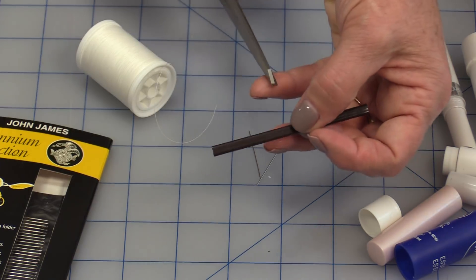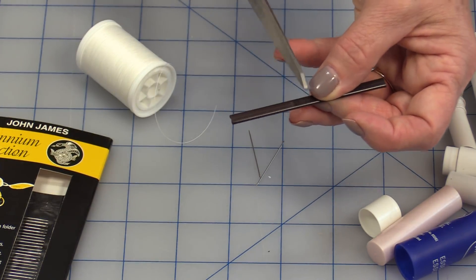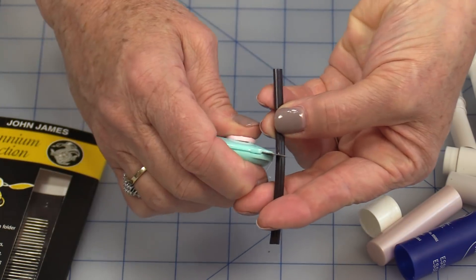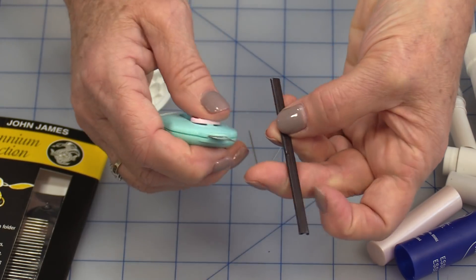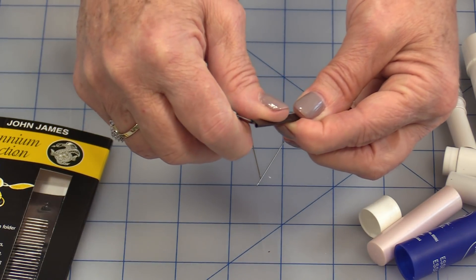You could do it with a little X-Acto knife. Just put tiny little marks, one on each end, and put one on the top and one on the bottom. The little notch just needs to be enough to hold a piece of thread. A little notch up at the top on each end.